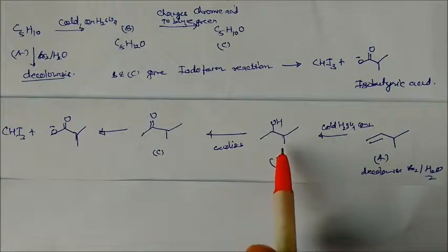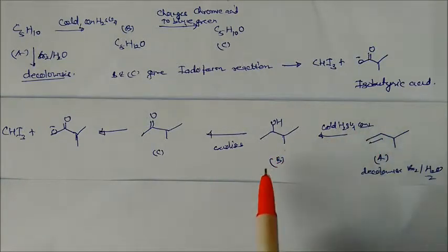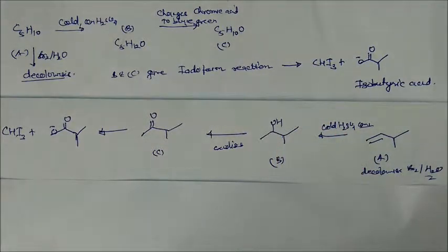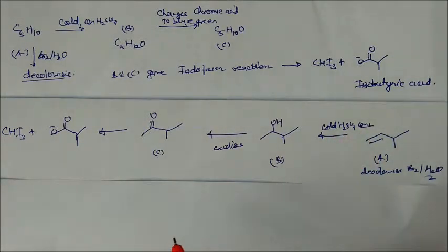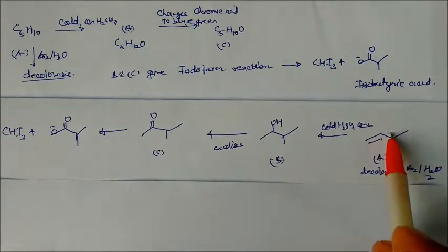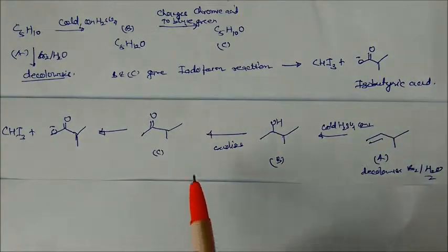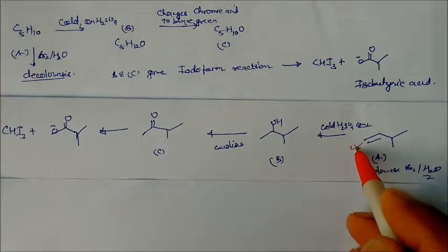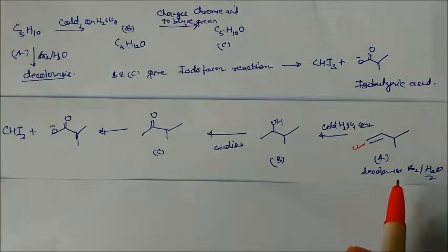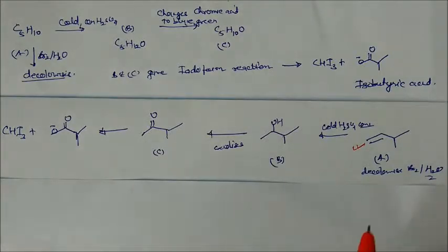B is obtained from A by cold concentrated H2SO4, which is a hydration reaction. The compound must have the double bond in a specific position — if written on the other side, the ketone will not be formed. So the only valid possibility is this structure. After hydration, the alkene A easily decolorizes bromine water. This is the final answer.